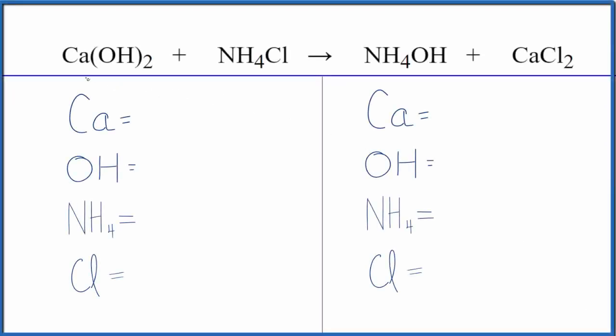In this video, we'll balance the equation for Ca(OH)₂ plus NH₄Cl. This is calcium hydroxide plus ammonium chloride. To balance this equation, we're going to use a bit of a trick to make it easier.